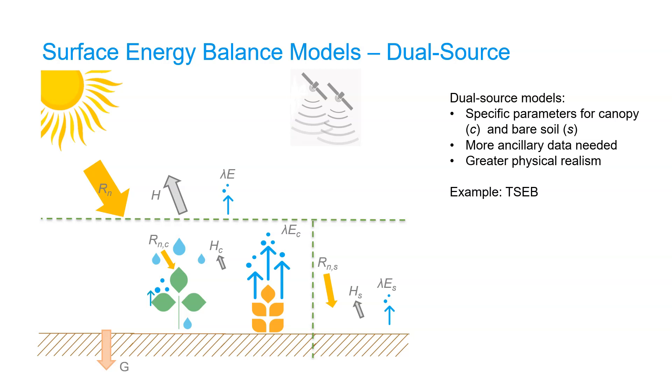An example of a dual source model is the TSEB model. Now you might think that we should always use dual source models because they have a more precise physical representation of the system. However, a lot of data that you need for these models is not available or not accurately obtained. Therefore we can say that a simple but correctly calibrated single source model might well perform better than an ill-parameterized dual source model. The most popular models are single source models.